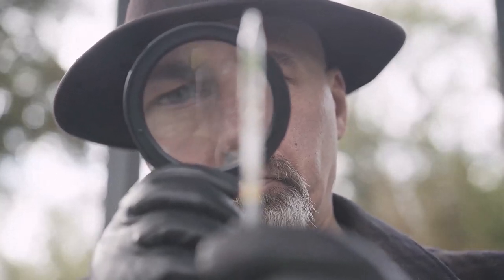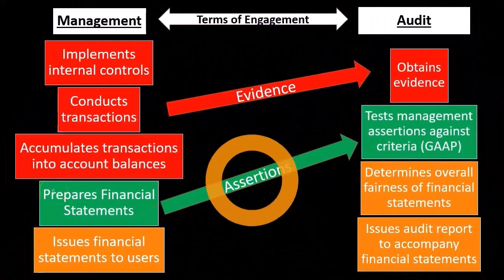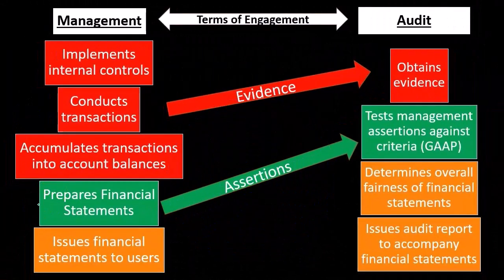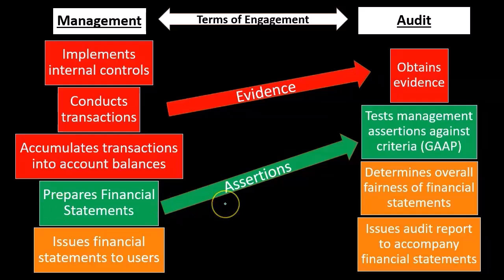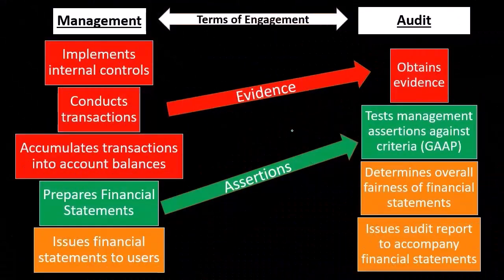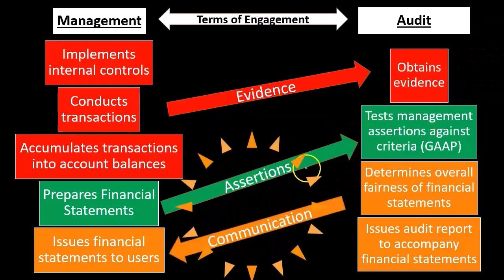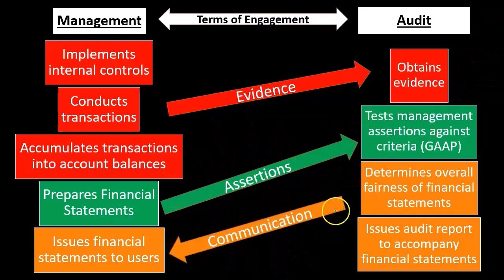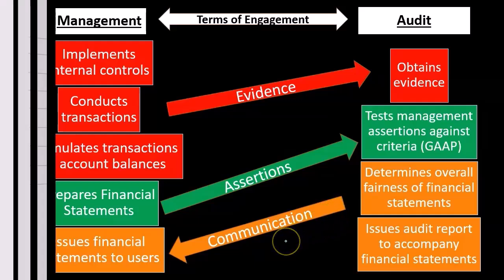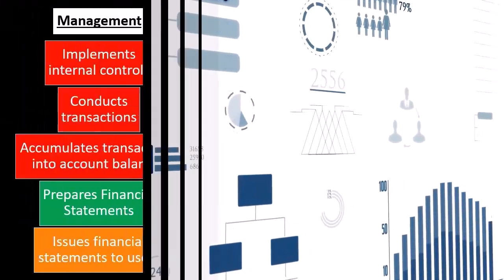We rely to some extent on the internal controls — the checks and balances of the system. Then we have the assertions, which relate to the preparation of the financial statements in accordance with generally accepted accounting principles. We're going to test management's assertions against that criteria, determine the overall fairness of the financial statements, and then issue our audit report to the users of the financial statements.